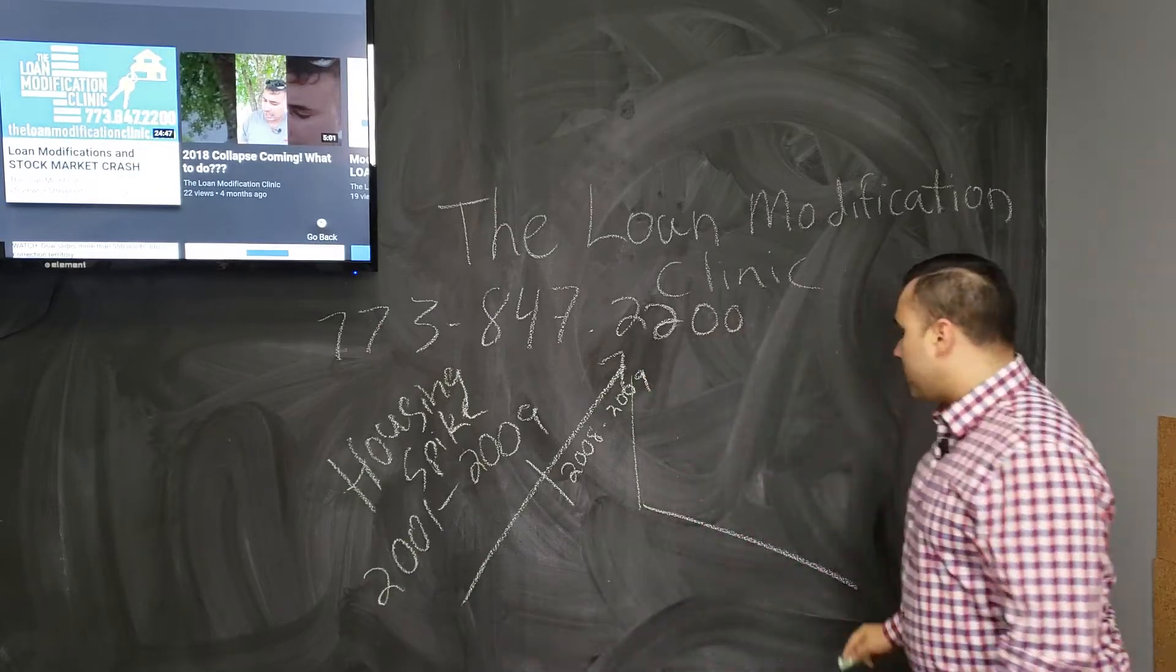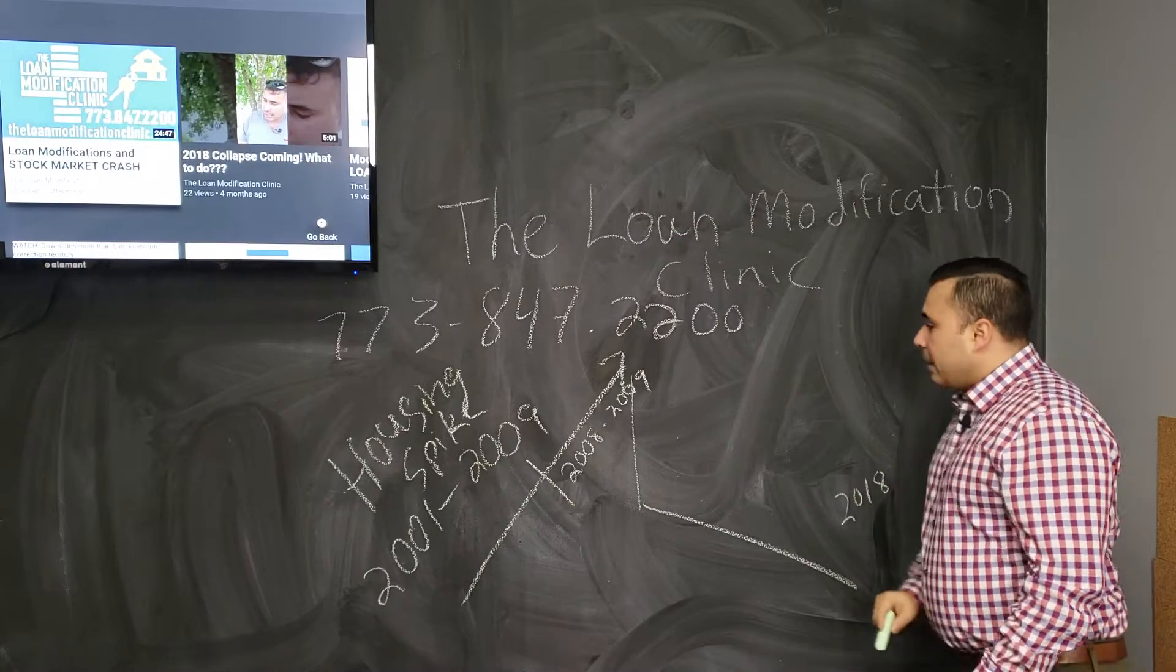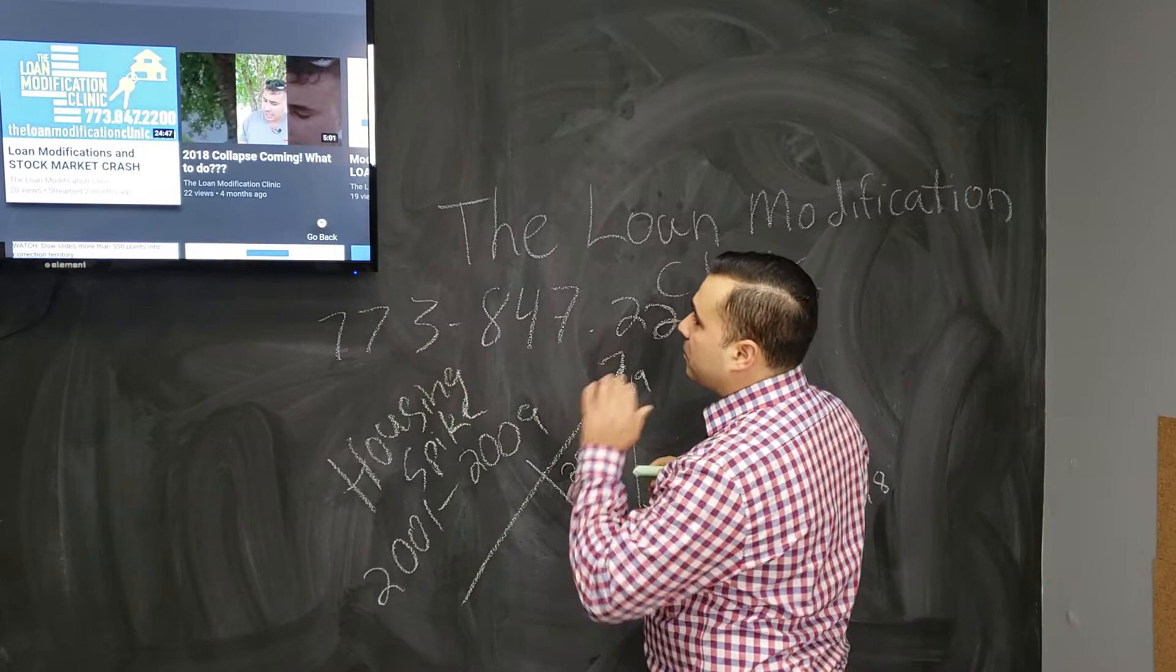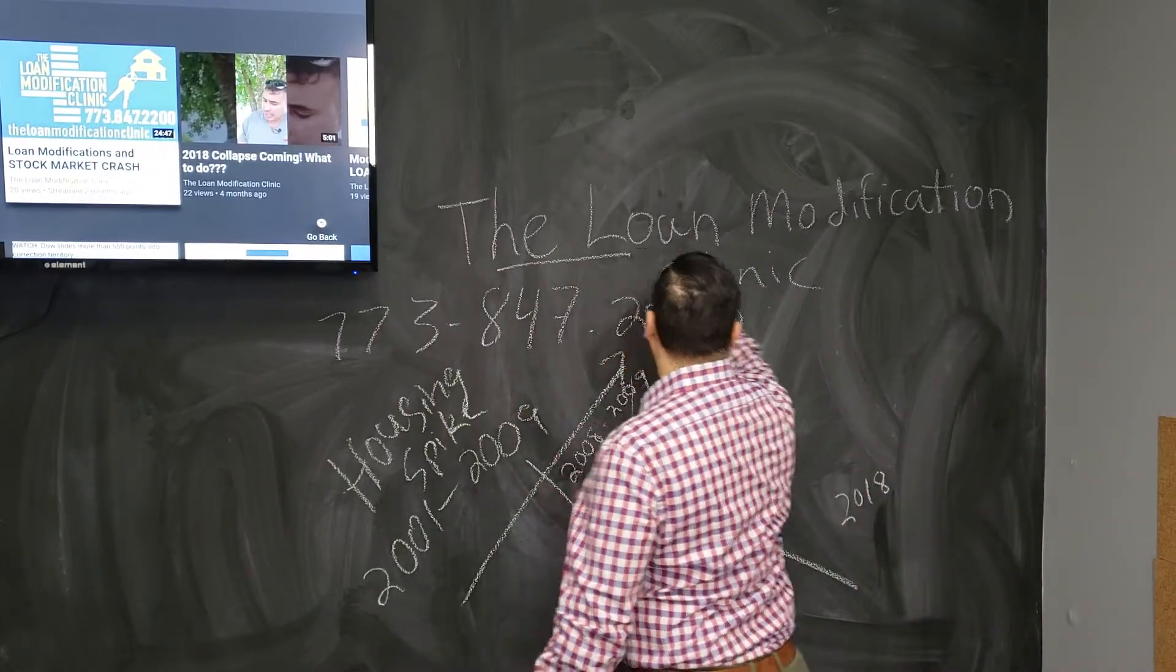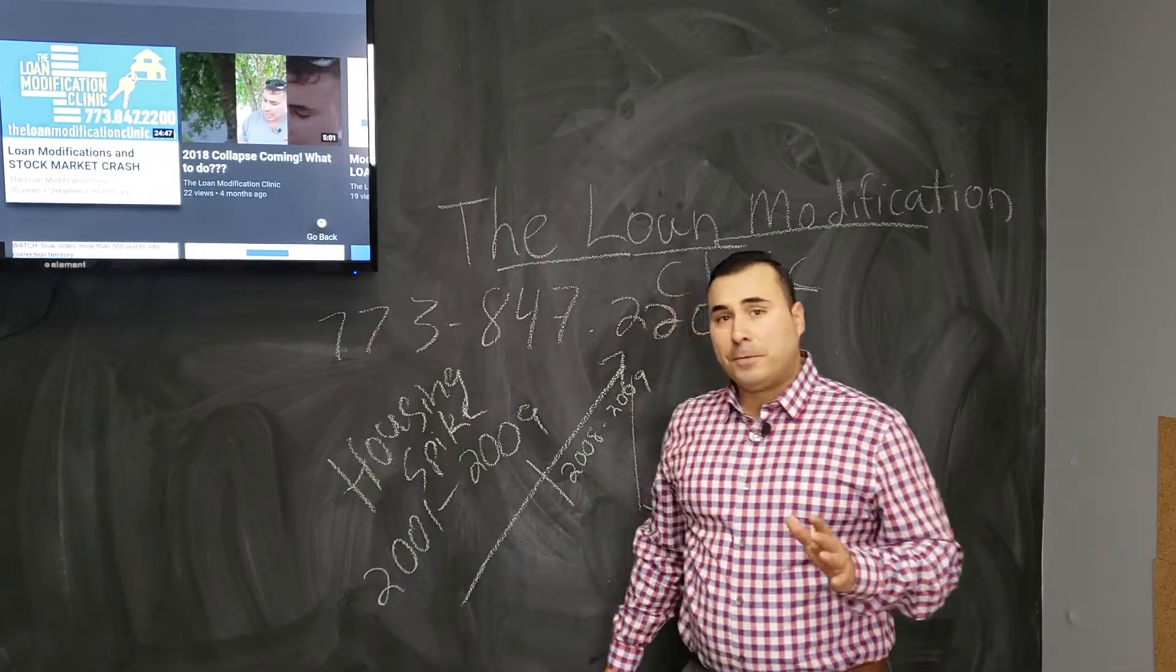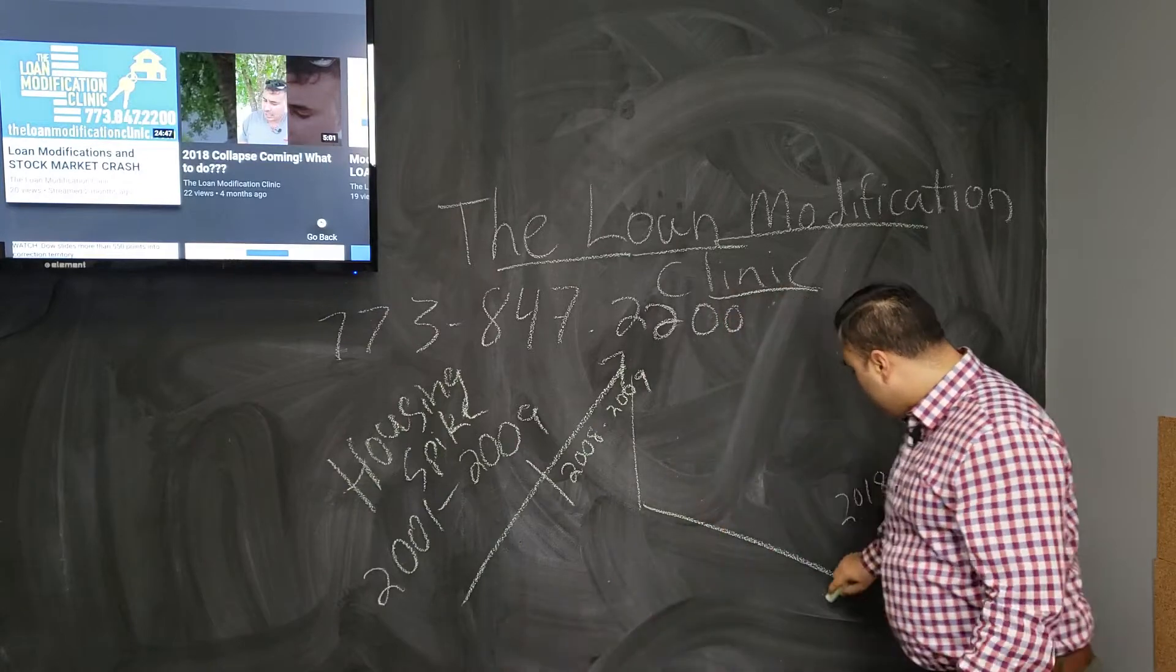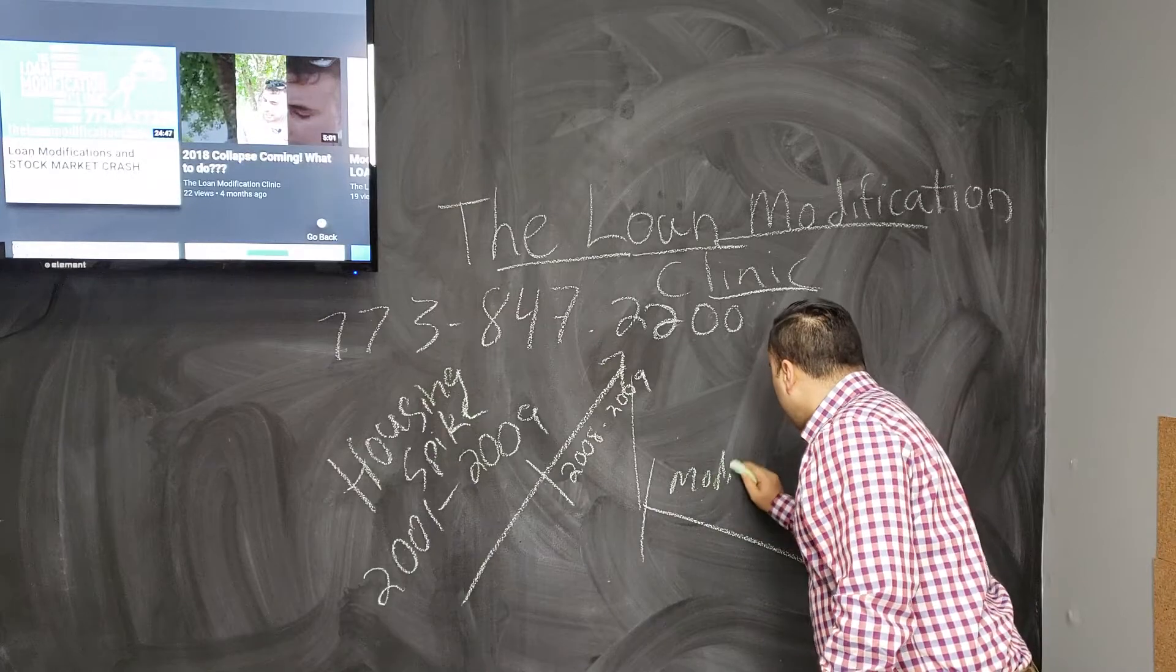Right now we're in 2018, and I predicted that the stock market was going to start going down. I did this prediction four months ago. The reason the Loan Modification Clinic is successful is because there are people that are losing their homes and they need help. As you're going to see as this line goes down, you're going to see people modifying their home.